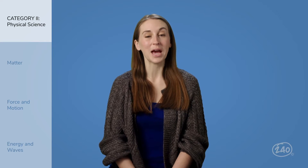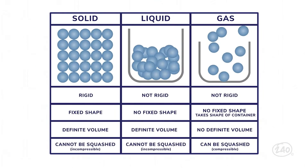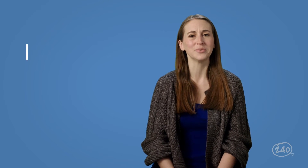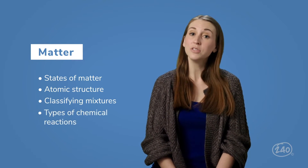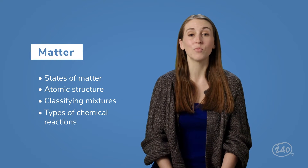We'll start with physical science. Within the physical science category, you're going to see questions on matter and its interactions, force and motion, and energy and waves — basically anything from a physics or chemistry class. In the matter part, you'll need to know all about the states of matter — the characteristics of a solid versus a liquid versus a gas. You'll also need to know about structures and properties of matter, from atomic structure to classifying mixtures, as well as chemical reactions, the different types, and whether they give off or absorb heat.